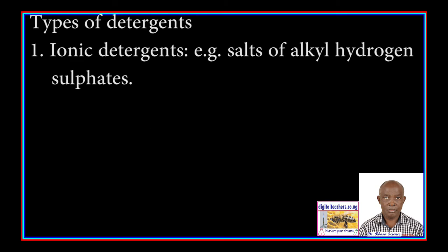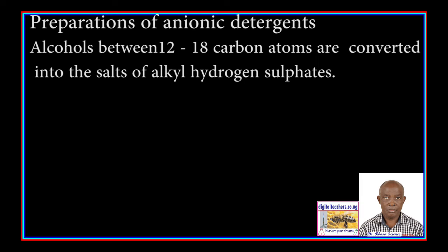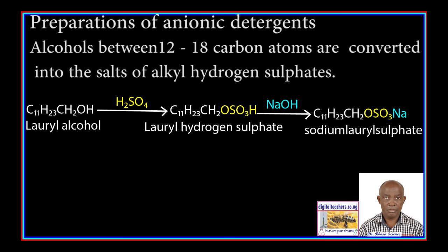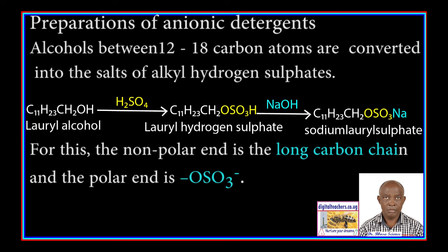Types of detergents. 1. Ionic detergents, for example, salts of alkyl hydrogen sulfate. Preparation: Alcohols between 12 to 18 carbon atoms are converted into salts of alkyl hydrogen sulfate. For example, lauryl alcohol reacts with sulfuric acid to form lauryl hydrogen sulfate, which is neutralized to form sodium lauryl sulfate, which is a detergent. For this type, the non-polar end is the long carbon chain and the polar end is the sulfate ion.